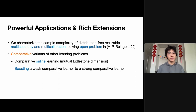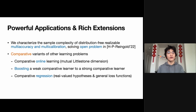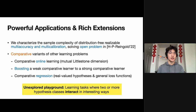Another classic result in learning theory is boosting, and in this paper, we give an efficient algorithm that can boost a weak comparative learner to a strong comparative learner. We also study regression in the comparative setting with real-valued hypotheses and general loss functions, and prove sample complexity results for comparative regression in certain settings. As you can see, comparative learning leads us to a rich collection of results. All these results convey a very strong message that comparative learning opens up an almost unexplored playground, which consists of learning tasks where two or more hypothesis classes interact in interesting ways.